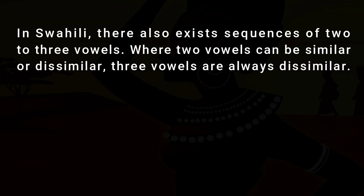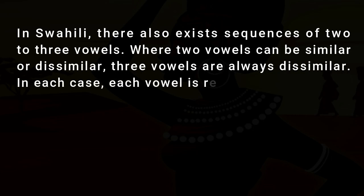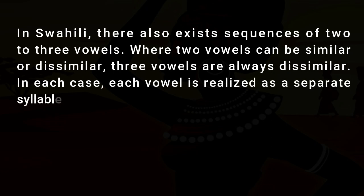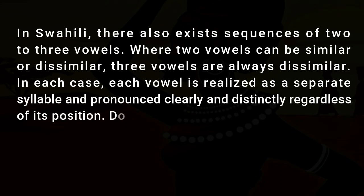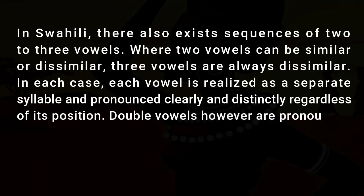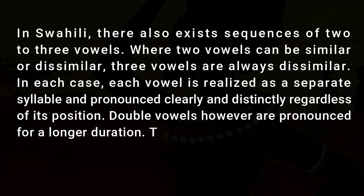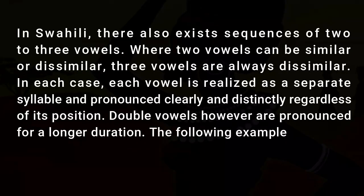Three vowels are always dissimilar. In each case, each vowel is realized as a separate syllable and pronounced clearly and distinctly regardless of its position. Double vowels, however, are pronounced for a longer duration.